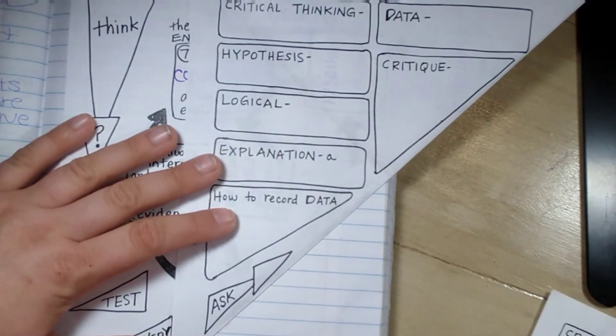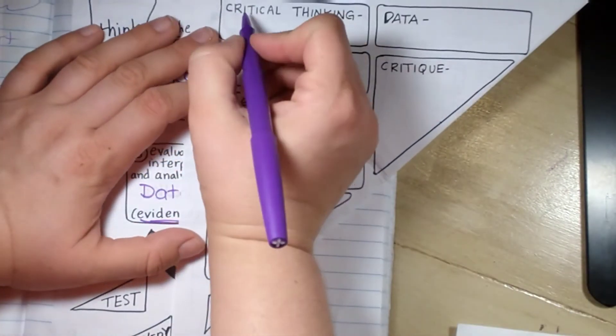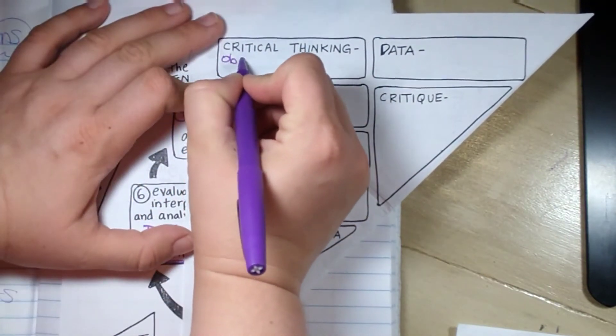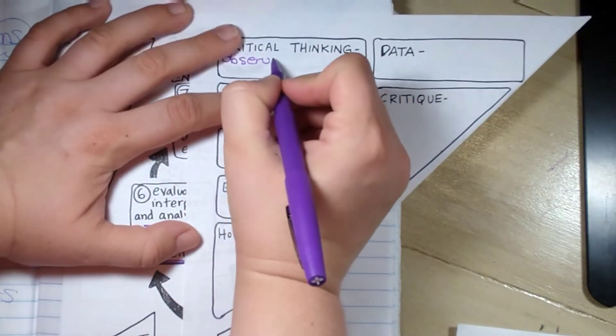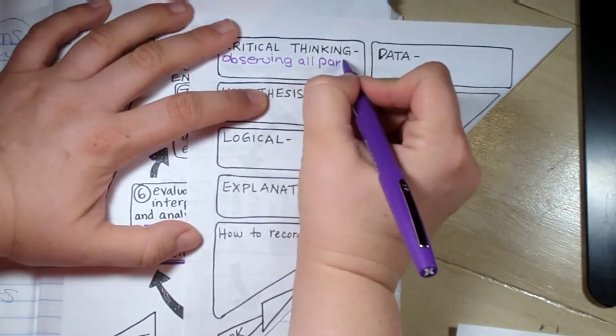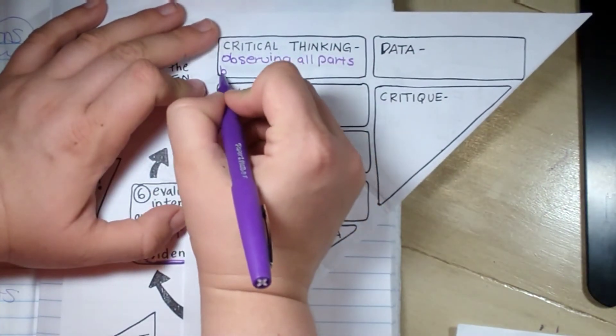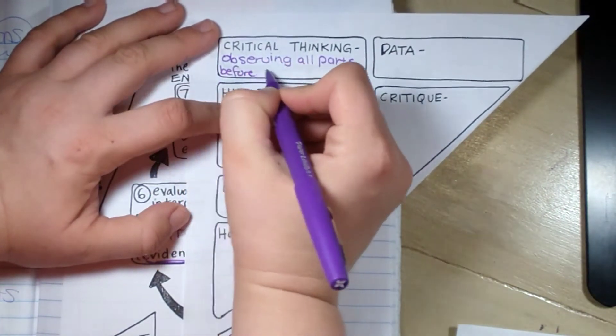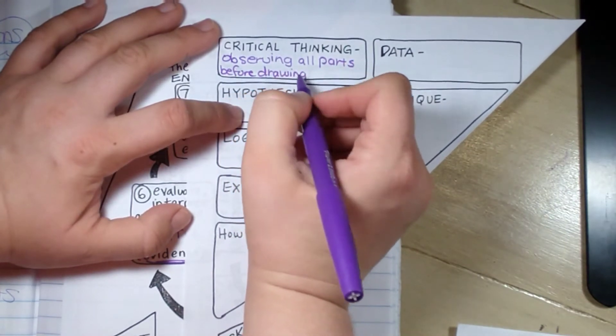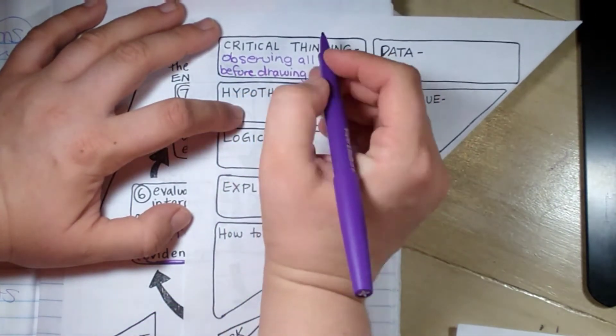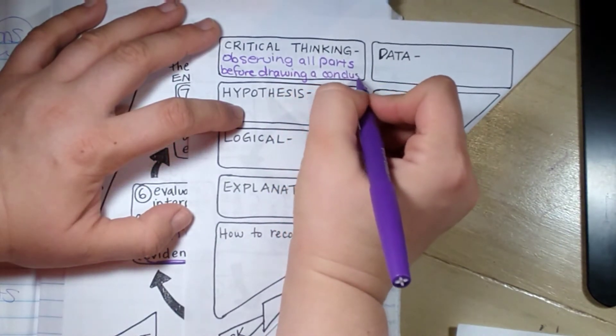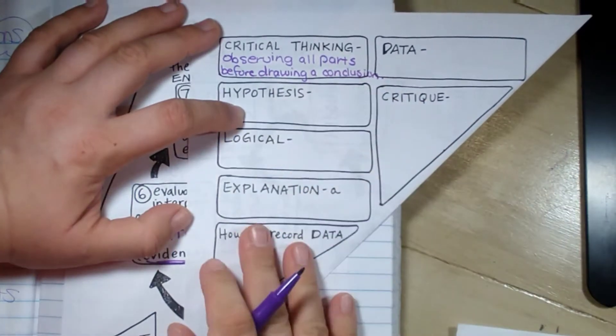The next one, critical thinking. What is critical thinking? You need that when you're doing a science experiment. It's observing all parts before drawing a conclusion. So before you draw a conclusion, you're looking at all the data, everything that you learned, everything that you observed, and taking all of that into account before you draw a conclusion.